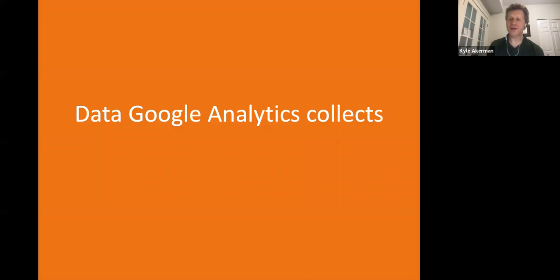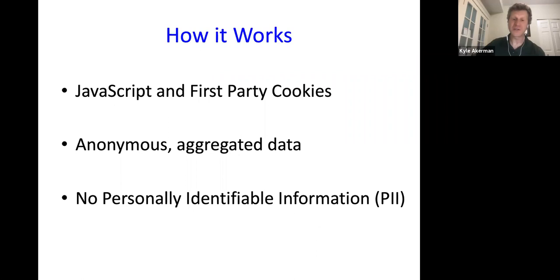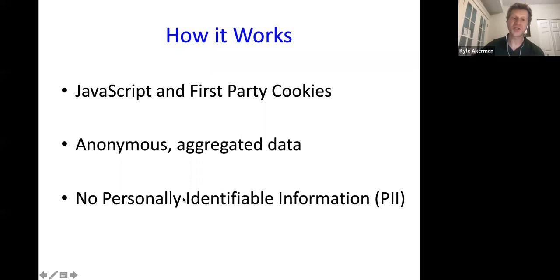The data collected operates off JavaScript and first-party cookies, and it's all anonymous aggregated data. You'll never know that a specific person like Kyle or Dennis visited your website — there's no personally identifiable information or PII. PII is things like an email address, phone number, or actual home address. None of that should be in your Google Analytics. You might accidentally pull some in, so that's something to check for, because Google doesn't want it in its database.